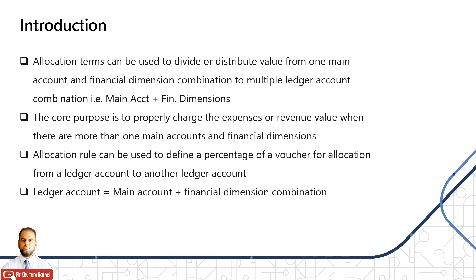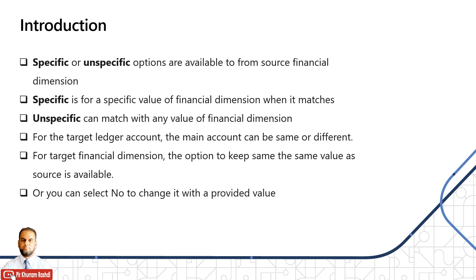Allocation rules can also be used to define the percentage of a voucher for allocation — from one ledger account to another. The maximum percentage is 100%. For example, if you want to divide an expense value 30% into one account and 30% to another, that totals 60%, and the remaining 40% will be retained in the source account. A ledger account is main account plus financial dimension in D365 Finance.